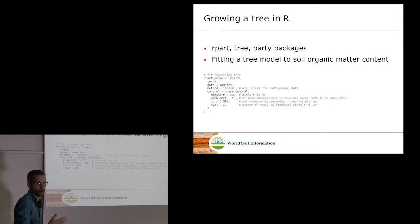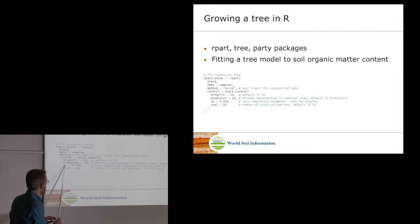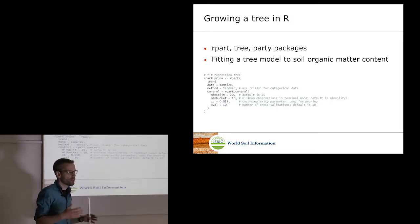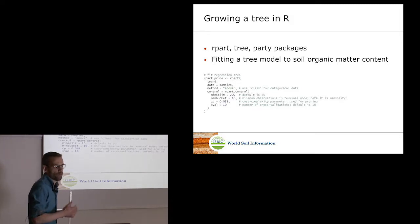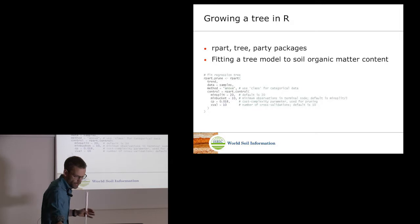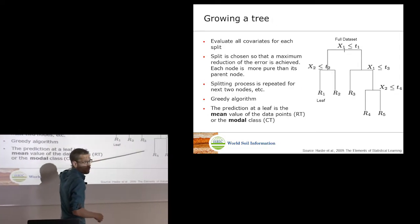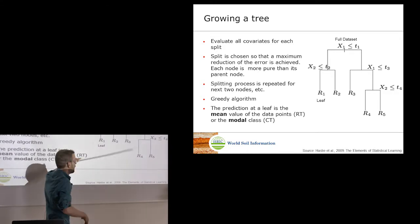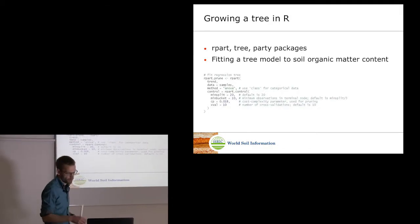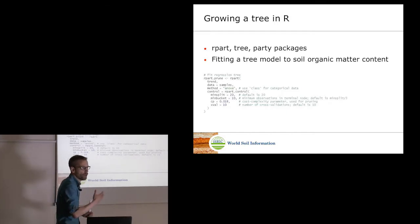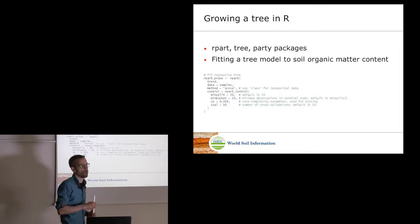There is also a complexity parameter (cp) that controls the size of the tree, because trees can easily overfit — where the tree almost perfectly predicts your training data but performs poorly on new data. You have to control how much the tree grows and at some point prune it. There is also a cross-validation parameter. All these have default values, but you can specify them, and I'm happy to explain further if you like.